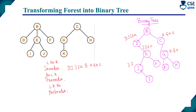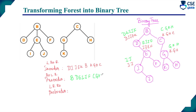Pre-order traversal (root, left, right): root is B. Left subtree — root D (no left), then E, then I, J, and F. Right subtree — root C, then G, K, then H (no right). The complete pre-order traversal is: B, D, E, I, J, F, C, G, K, H.